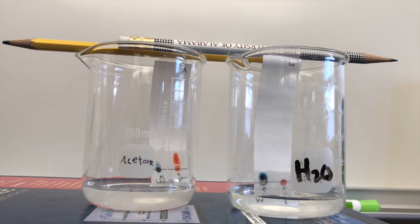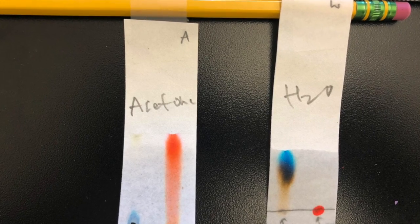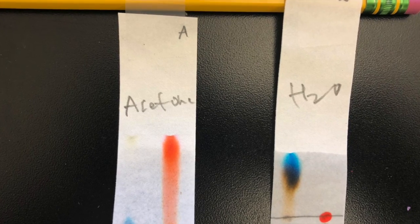Watch as the acetone moves the permanent marker but not the washable and vice versa with the water moving the washable but not the permanent marker. This tells us that the permanent marker is nonpolar and the washable is polar.